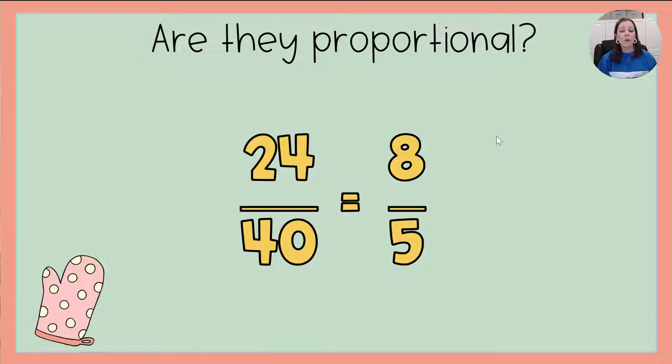Let's take a peek at one more. We've got 24 to 40 and 8 to 5. We know that 24 divided by 3 is 8, but 40 divided by 8 is 5. So since we didn't do the same thing to both quantities, these are not proportional. That's a no.